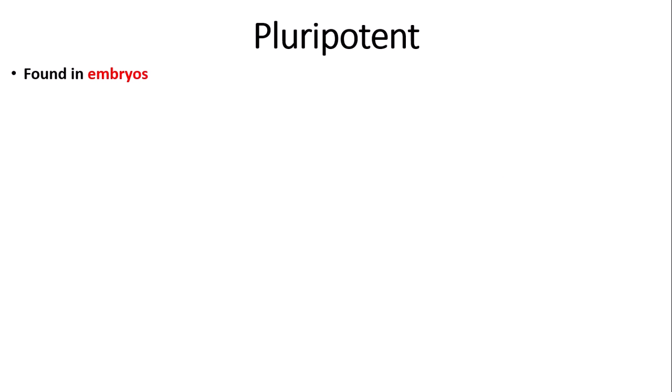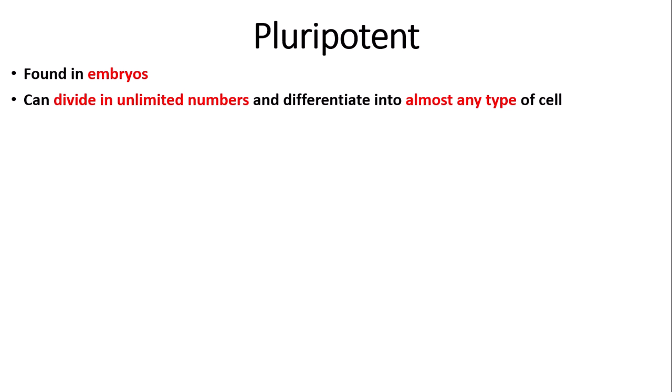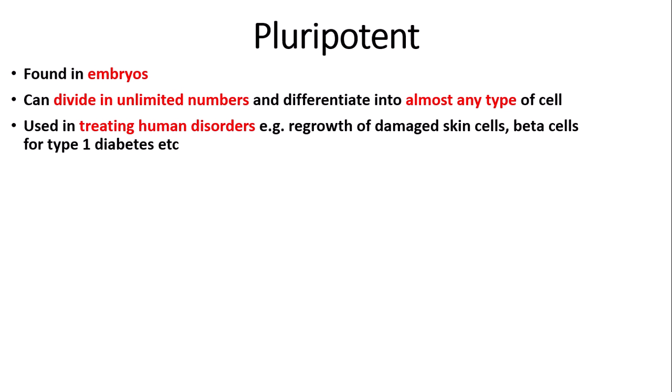The next type are pluripotent stem cells, which are found in embryos. Pluripotent stem cells can divide in unlimited numbers and differentiate into almost any type of cell — not every single type like totipotent cells, but almost any. Pluripotent cells are used in treating human disorders, for example regrowth of damaged skin cells from a burn, regrowing beta cells damaged in type 1 diabetes, and growing neurons to treat diseases such as Parkinson's or Alzheimer's.